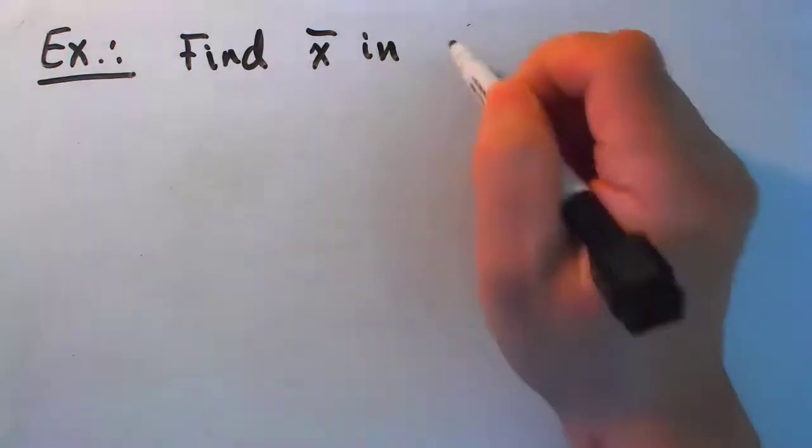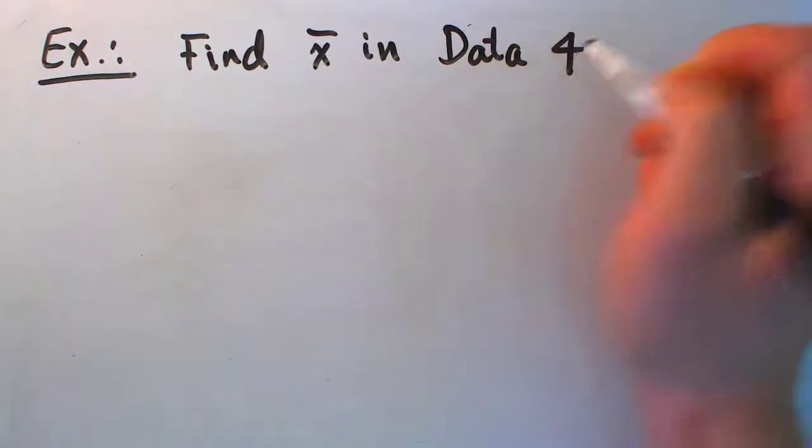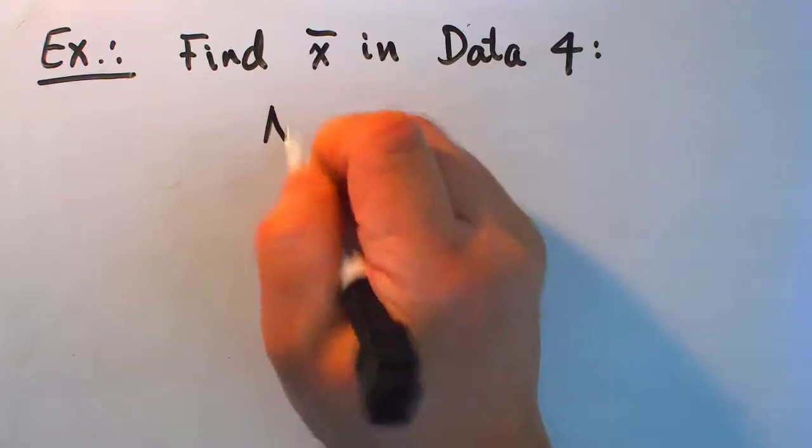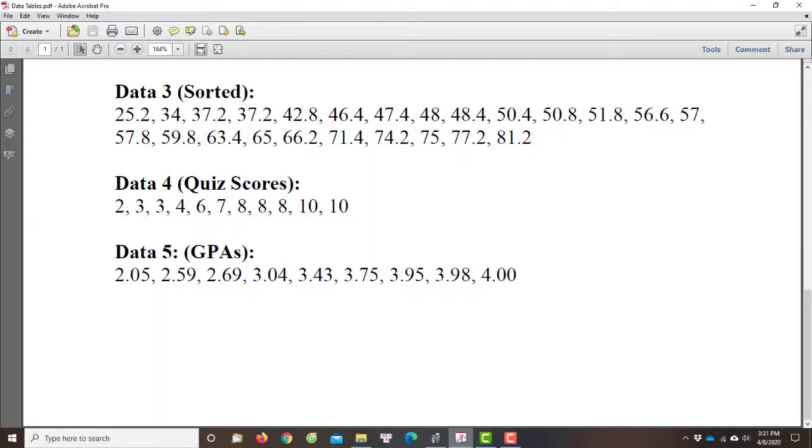Let's call it Data 4 in your data sheet. Now, quickly before we start counting through the data, we're looking at N equals 11, the N number in Data 4, or the number of data values in Data 4.